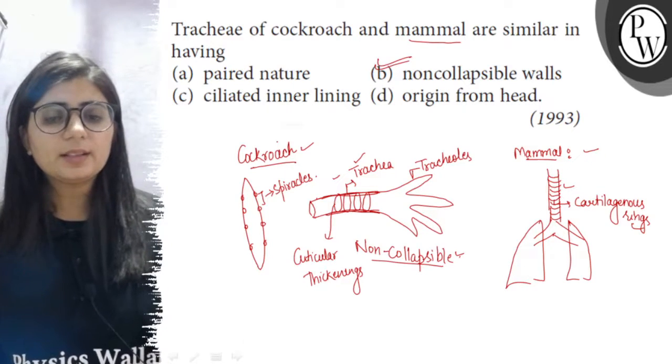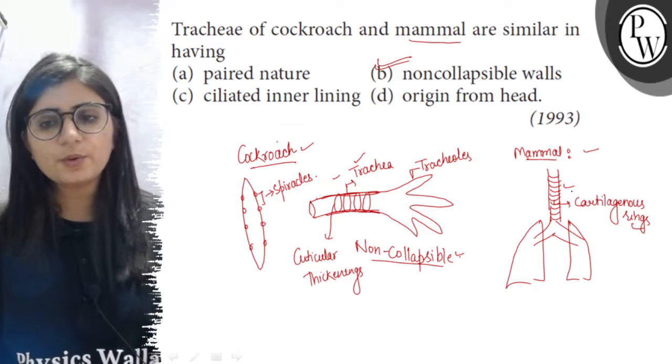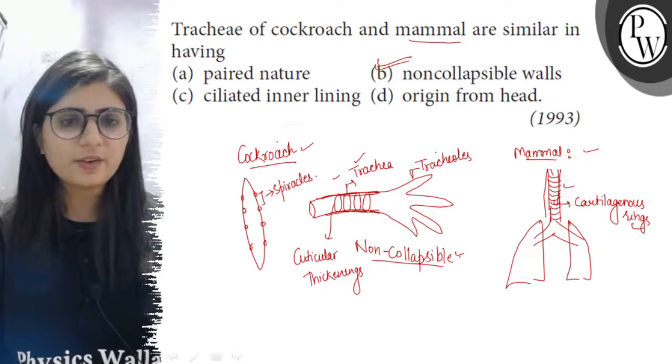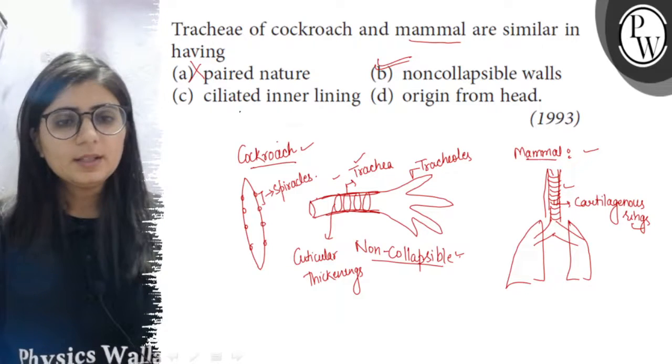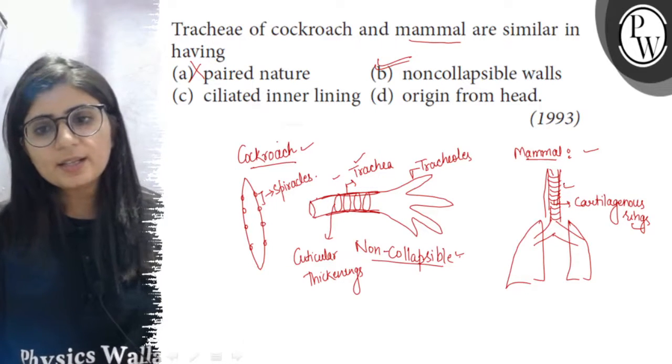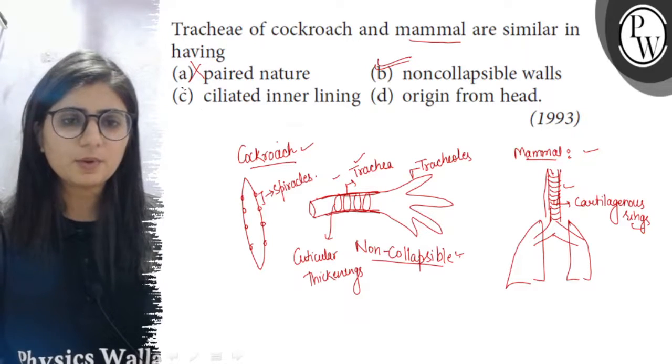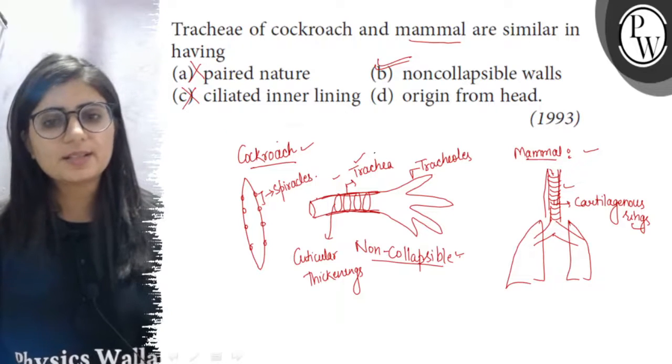If we look at other three options: paired nature - no, the trachea are not in pair. In mammals there is only a single trachea so they are not paired. Ciliated inner lining - in case of mammals there are cilia present in the tracheal region but in cockroaches no cilia are there. So it is discarded.